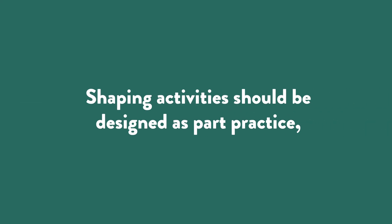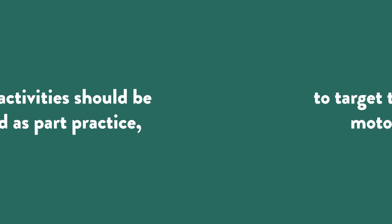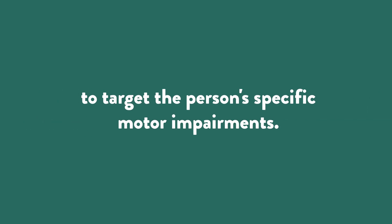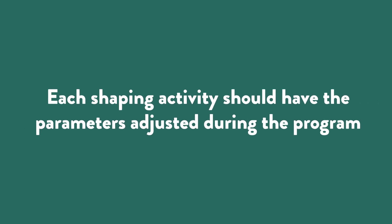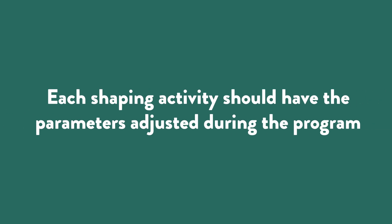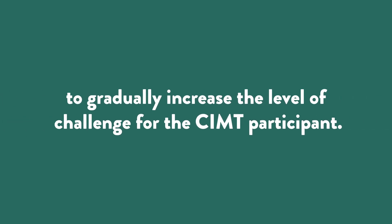In summary, shaping activities should be designed as part practice to target the person's specific motor impairments. The tasks that are set should usually be somewhere between 30 seconds and two minutes in duration. And each shaping activity should have the parameters adjusted during the program to gradually increase the level of challenge for the CIMT participant.